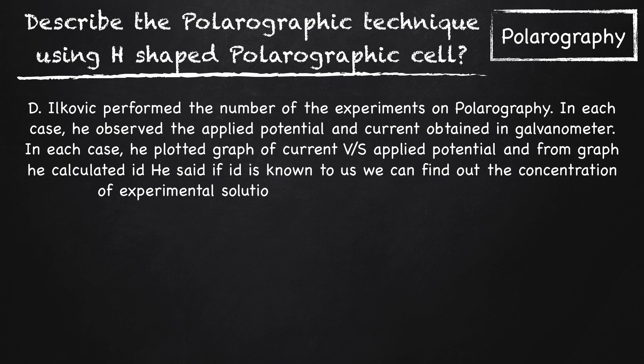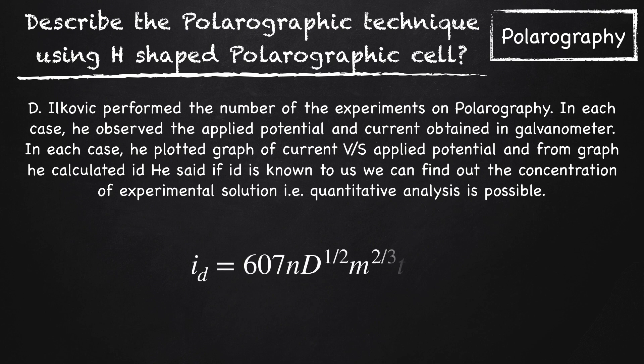The equation is: id = 607 × n × D^(1/2) × m^(2/3) × t^(1/6) × C.